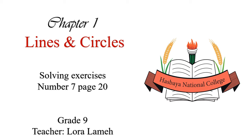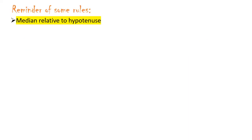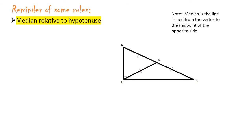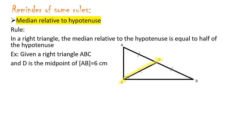Hello dear Grade 9 students. In this video we will explain the solution of number 7, page 20. Before we start, some rules you should remember. First: the median relative to the hypotenuse. A median is a line issued from the vertex to the midpoint of the opposite side. The rule says: if the triangle is a right triangle, the median is issued from the 90-degree angle to the hypotenuse.